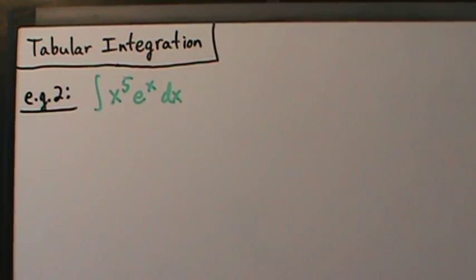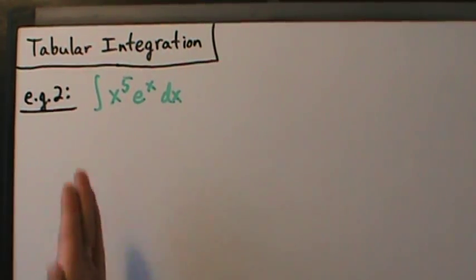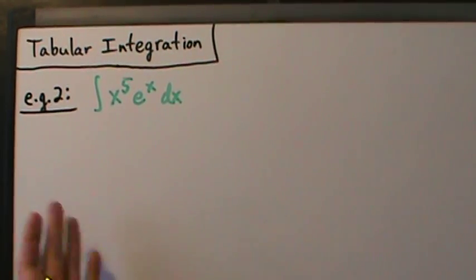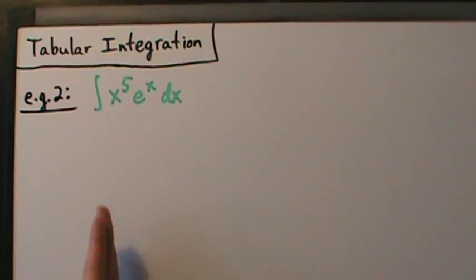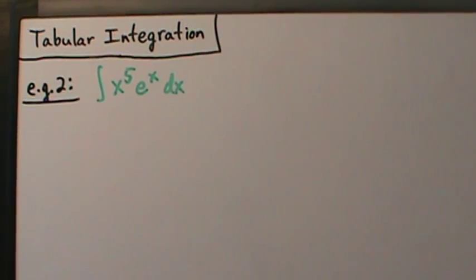Here's example two with tabular integration. This one's going to be a little more complicated — well, not really more complicated, there's just more steps, or not even more steps, just more that we're going to put in the table. Really everything else is exactly the same.